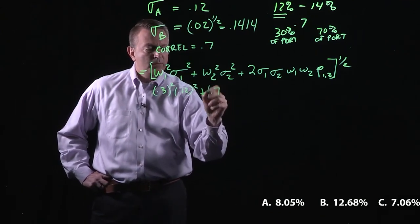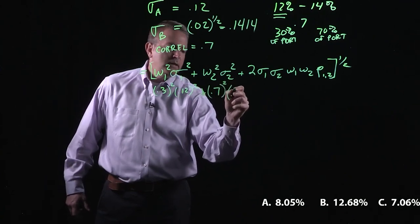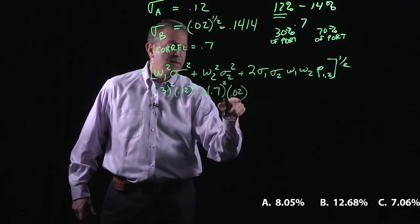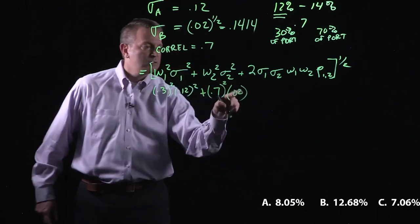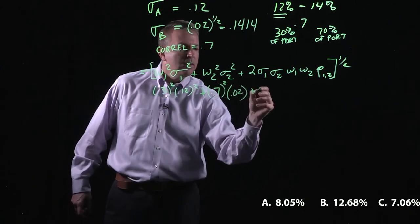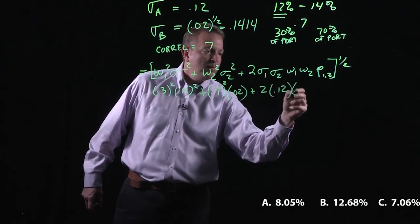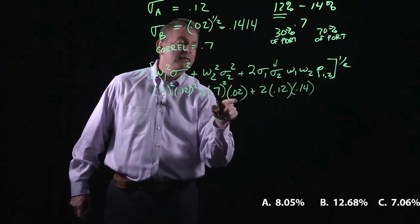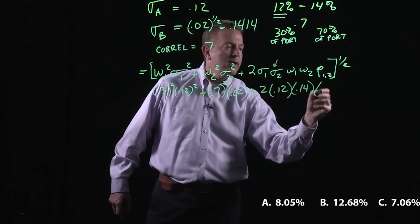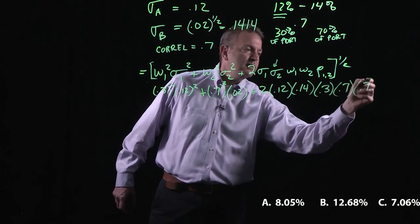If we do the next term, we're going to do 0.7 because we already know that 70% was going to be in portfolio two. We did remember the variance is the squared term of standard deviation. So we're not going to put any square on there. It's two times, and we're going to do 0.12, 0.14. That's the square root of our variance, right? Then our weights, 0.3, 0.7, correlation 0.7.